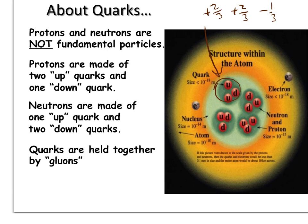And so, if you add up the charge of two up quarks and one down quark, you actually get plus one. And that's the charge of a proton.